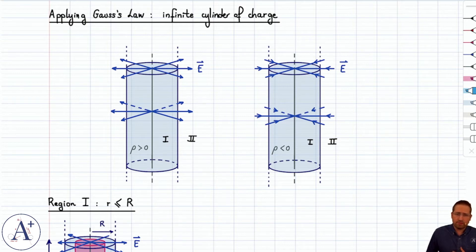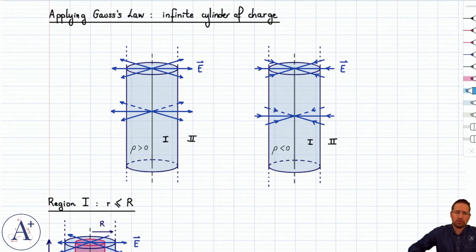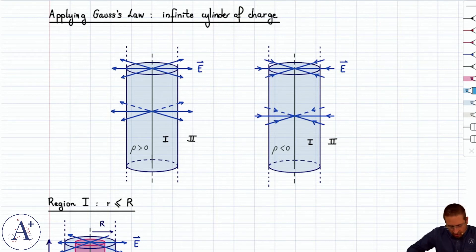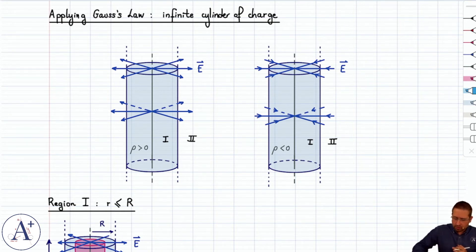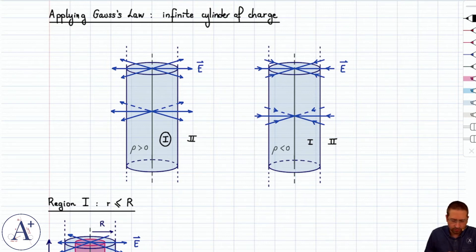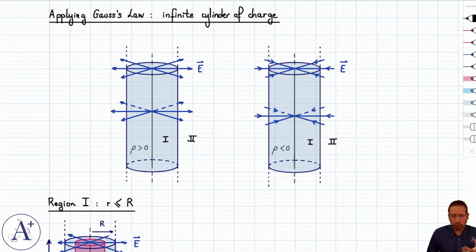In terms of similarities, the symmetry is the same, and therefore we have an electric field that is radially outward if the cylinder is positively charged, or radially inward if negatively charged. The difference with the line of charge is that the cylinder has a volume with charge distributed throughout it. Therefore we have volume charge density rho, positive or negative, and not linear charge density. Because the cylinder has a volume, we have two regions of space: inside the cylinder and outside the cylinder. I typically label them region 1 and region 2, and we treat the two regions separately.